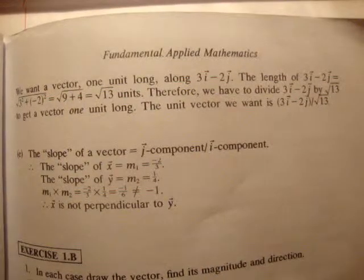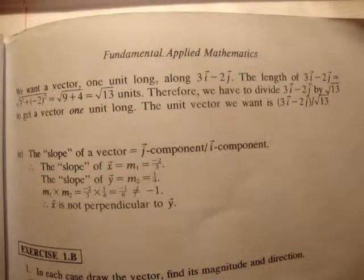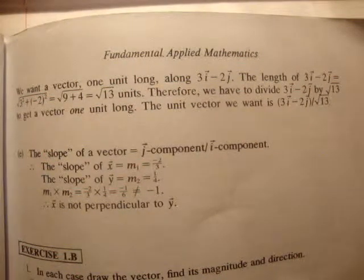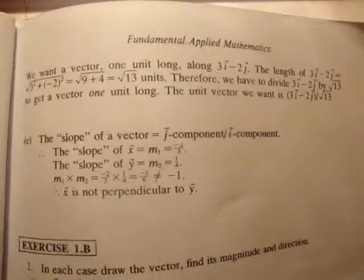In this video I'm going to start exercise 1b on page 17 of Fundamental Applied Mathematics. I'm not going to do all the questions, I'm just going to skip and do some of them. We'll start with question 1b, question 1, part 1. What we're asked to do is, in each case, draw the vector and find its magnitude and direction.